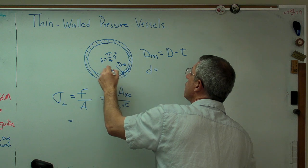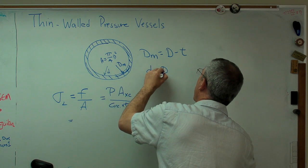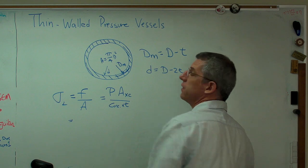The interior diameter, that diameter right there, is the outer diameter minus two wall thicknesses.